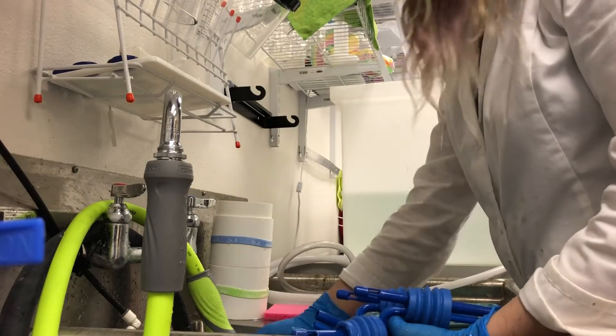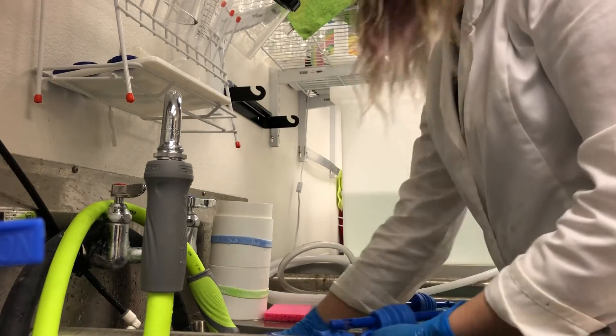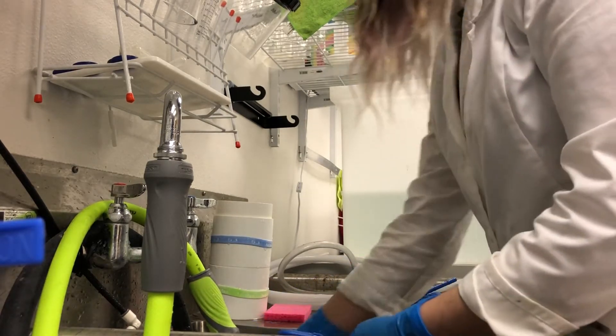We will do one final rinse in tap water and place the dishes onto a drying rack to dry. If the dishes need to be used immediately then they need to be rinsed with RO water to make sure that there is no chlorine left on the dishes from the tap water.